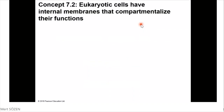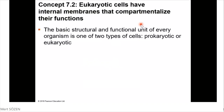Eukaryotic cells have internal membranes that compartmentalize their functions. The basic structural and functional unit of every organism is one of two types of cells, prokaryotic or eukaryotic. So every organism must have cells of one of these two types, prokaryotic or eukaryotic.